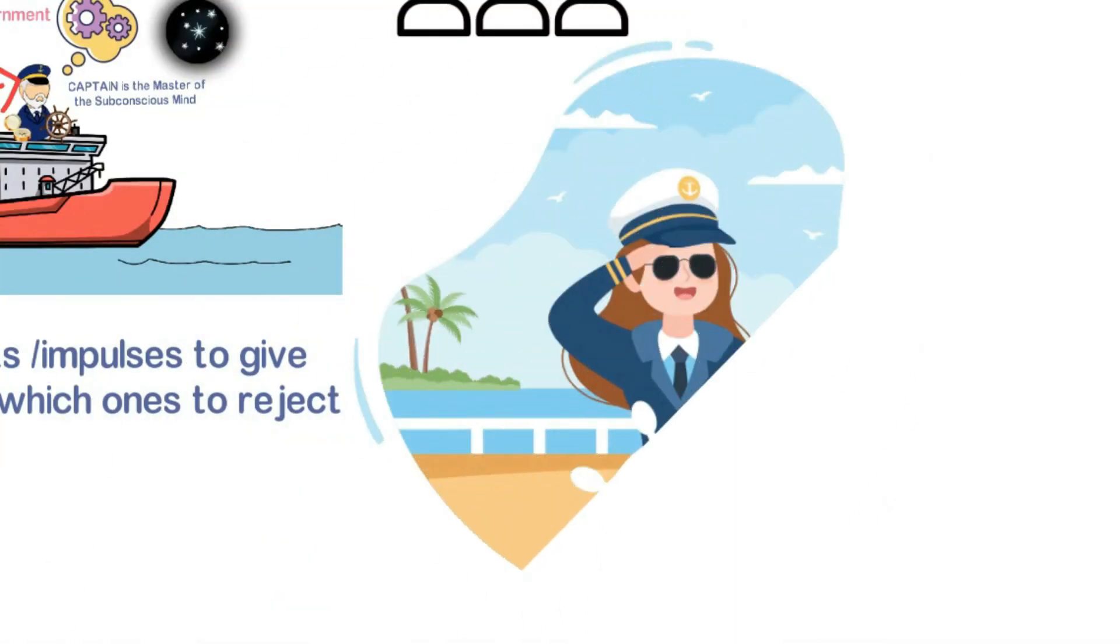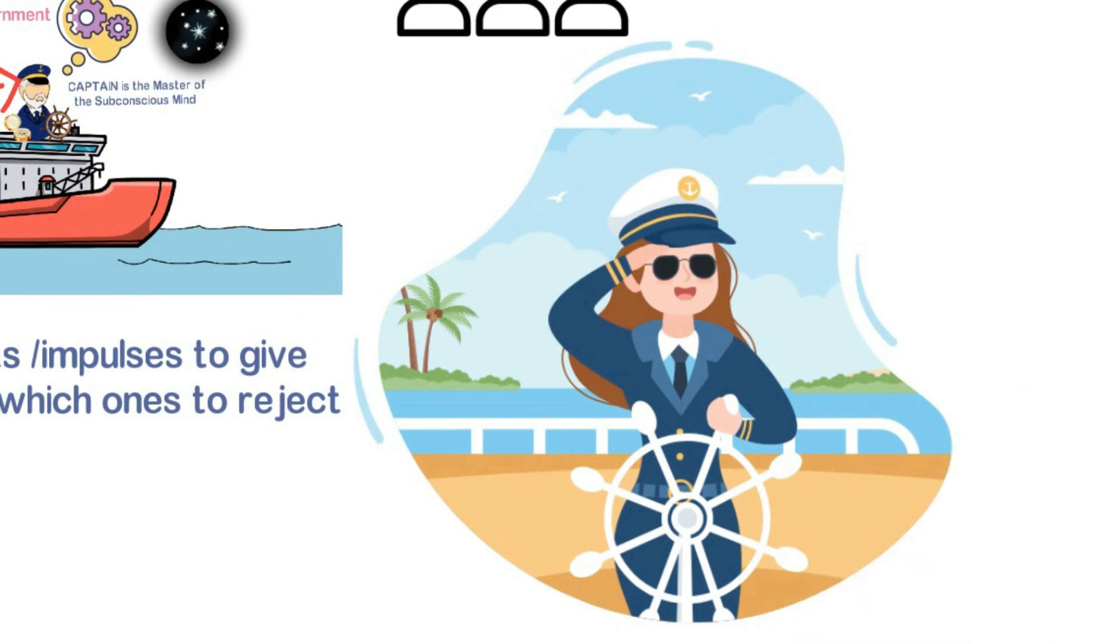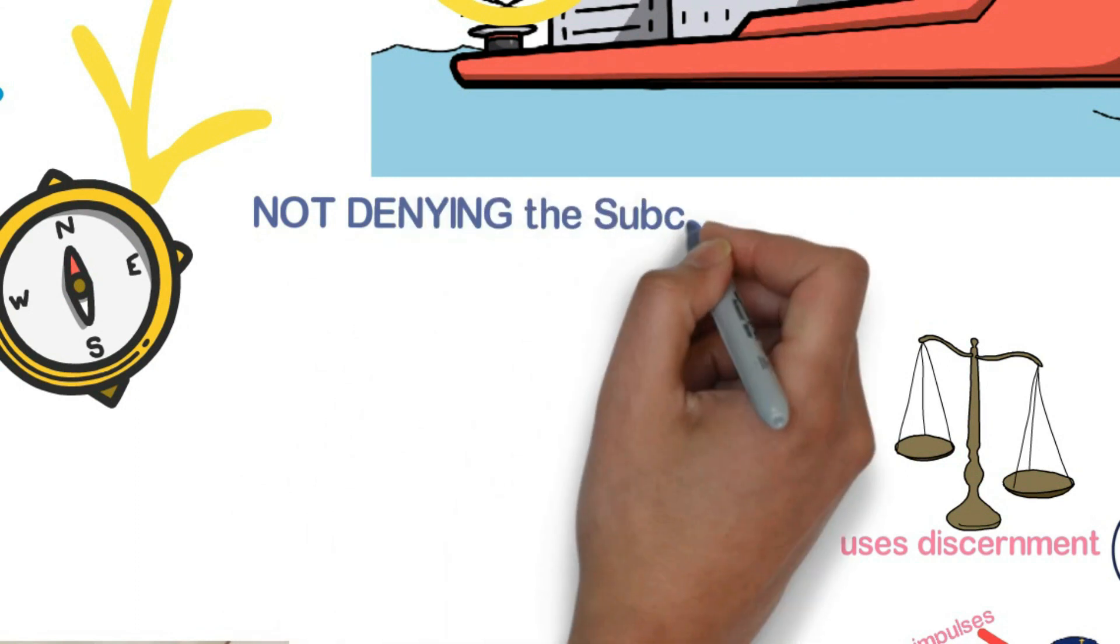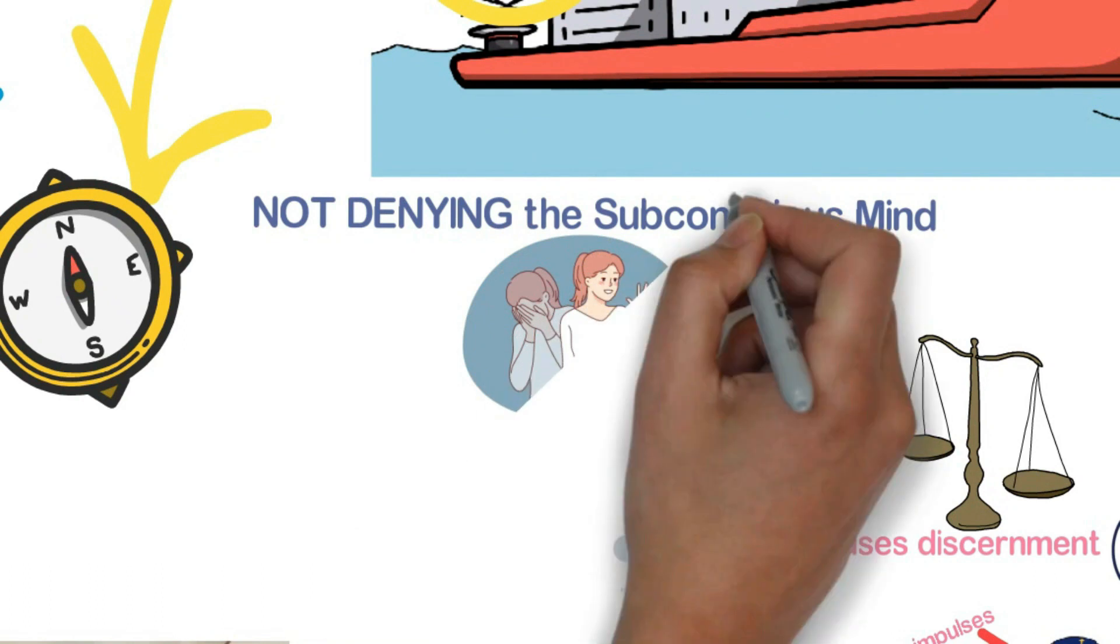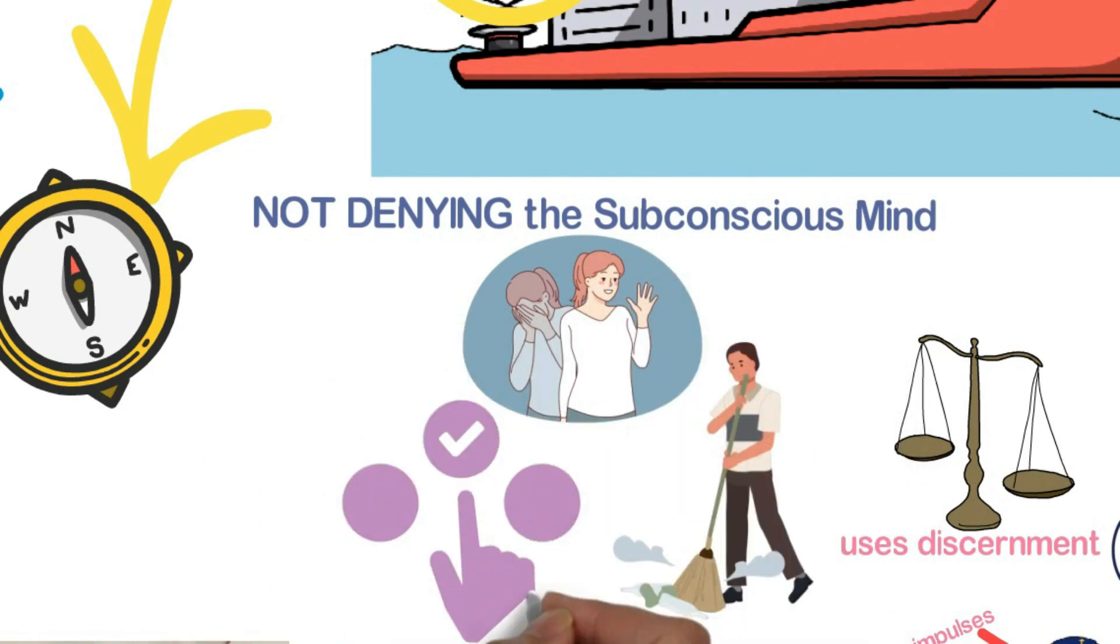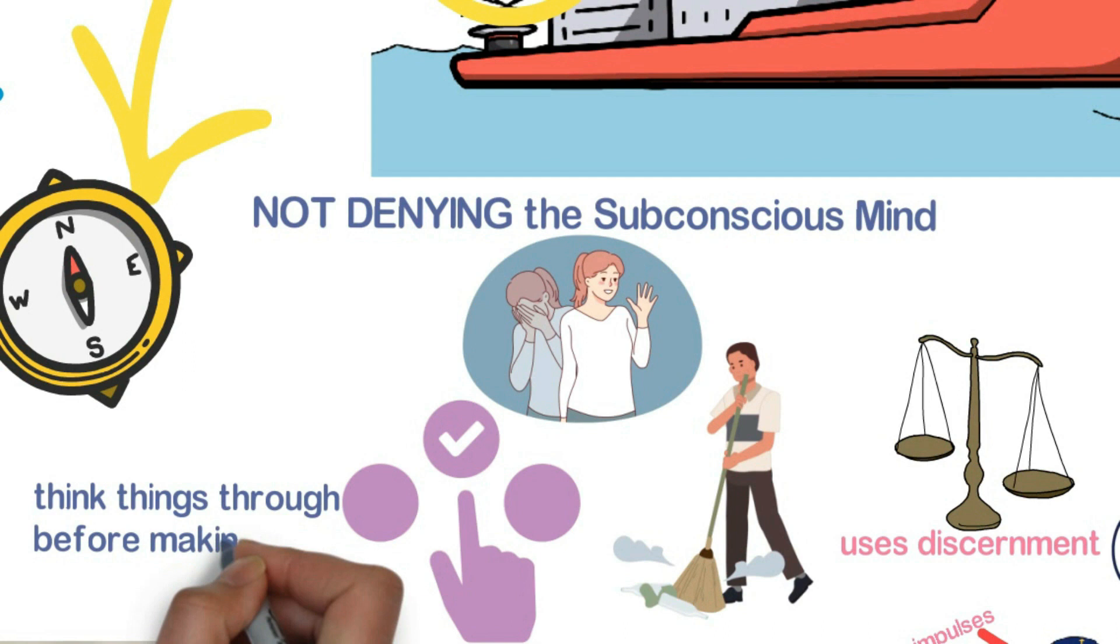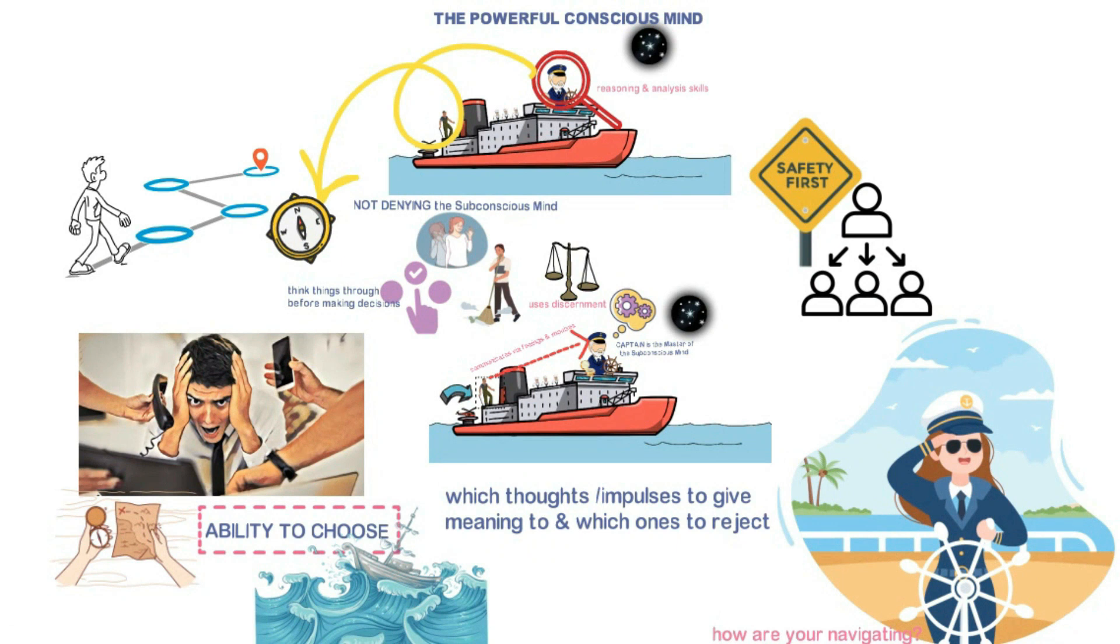And in a way, each one of us are a captain of our own ship, which is our life. So really contemplate whether you are skillfully steering your ship to safe heavens, or have you succumbed to the whims and fancies of your subconscious mind. And here, I want to emphasize that we are not denying the messages from our subconscious mind. We are not sweeping them under the rug. We are not pretending we didn't hear them. None of that. Instead, we deeply listen to the messages that the subconscious mind is relaying to us. And then, we use discernment to gauge whether or not to act upon those impulses.